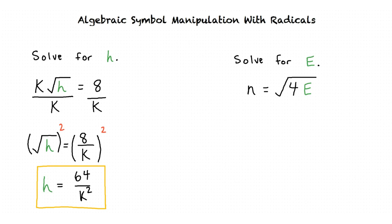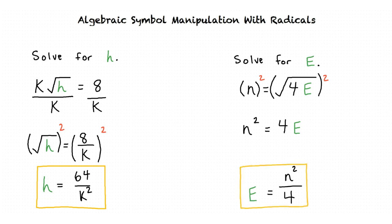Once again, we must square both sides of the equation in order to remove the square root containing 4e. The result would be n squared equals 4e. In order to isolate the variable e, we must divide both sides of the equation by 4. After dividing both sides by 4, our final result is e equals n squared over 4.